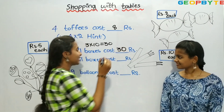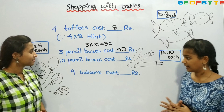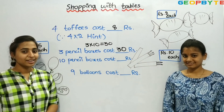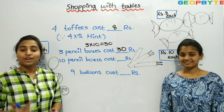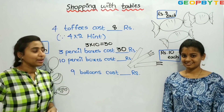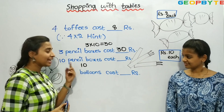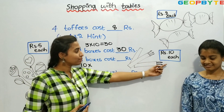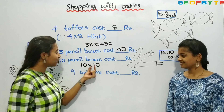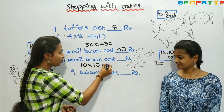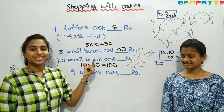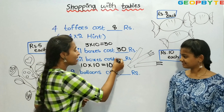Now let us see the next one. 10 pencil boxes cost dash rupees. We found out for 3 pencil boxes. For finding out for 10 pencil boxes, we need to multiply 10 with 10, because 10 pencil boxes into each pencil box is rupees 10. So, 10 into 10: 1 into 1 is 1, and we have 2 zeros, so it is 100. 10 pencil boxes cost 100 rupees.